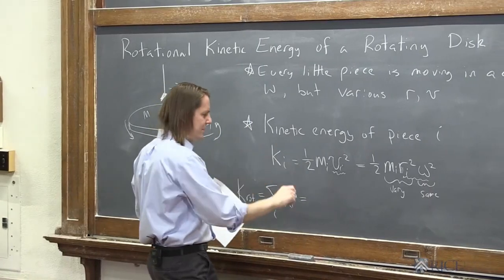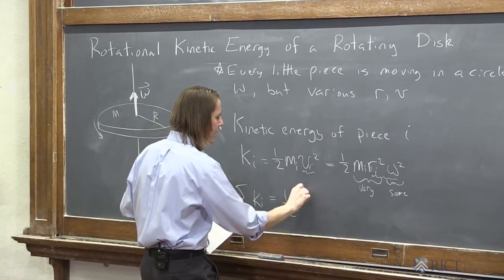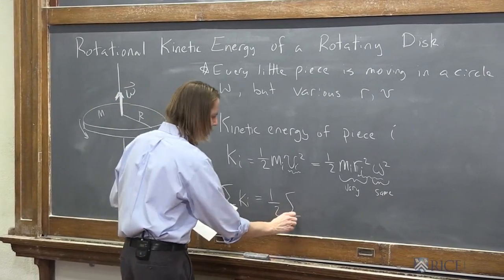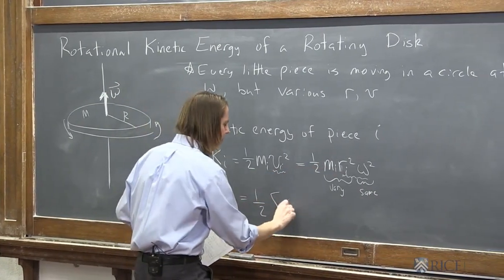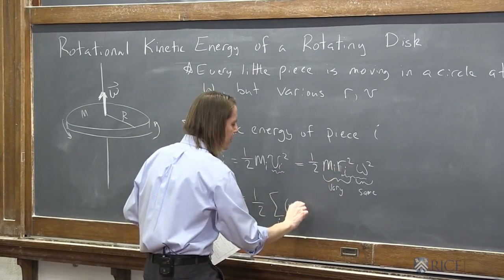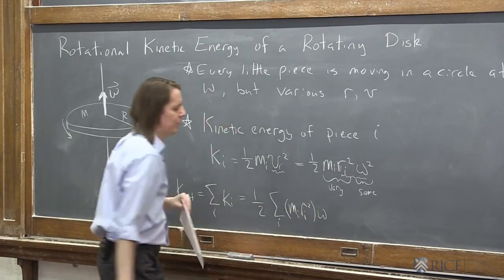So that's going to be equal to, just sum these up. Let's pull the 1/2 out. That's clearly a constant, right? And then we have the sum over all the i's. And now let's group the things that depend on i. So there's each one's m_i, its mass, and its position, its r squared, times omega.